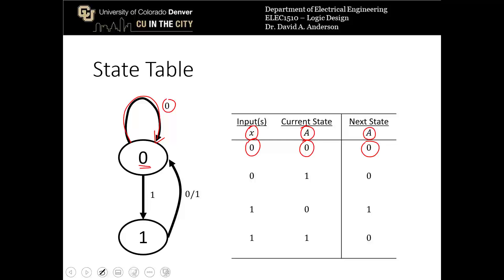So when the current state is a 1, and the input is a 0, so 1 is here, the input is here, the next state is a 0. When the current state is a 0, but the input is a 1, that's current state here, input here, we move to state 1. And when the input and the current state are both 1, that means current state here, input here, we return to state 0. So that's what the state table looks like for this state diagram.